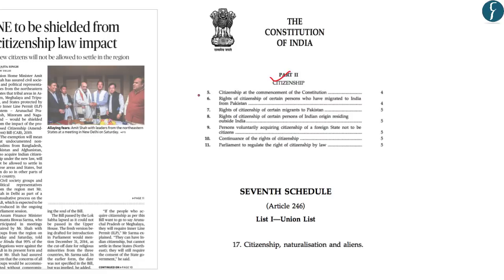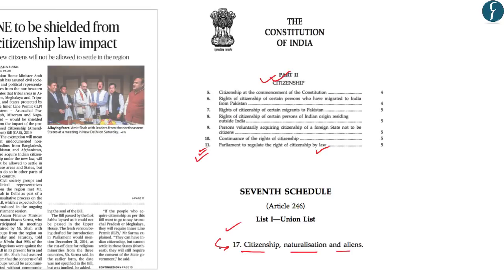Articles 5 to 9 deal with citizenship provisions at the time of commencement of the constitution. Article 10 deals with continuance of citizenship rights, and Article 11 — the most important — deals with the power of parliament to regulate citizenship by law. The constitution has given parliament the power to enact legislation on awarding or taking away citizenship, and this power is given under List 1, Item 17: citizenship, naturalization and aliens. Only parliament has the power to regulate citizenship under Part 2 and Item 17 of List 1 under the 7th Schedule.